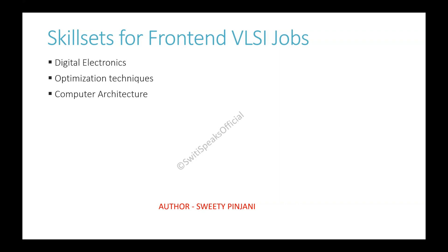The next thing is computer architecture. This also all of us have learned in college — microprocessor, microarchitecture, pipelining concepts, different memory levels. You need to go through them thoroughly: how processor pipelining works, what are different types of hazards, what are different levels of memory. There is RAM, ROM, main memory, secondary memory, and cache — which can also have different levels: L1, L2, L3. Then there are coherency concepts in memory, how to ensure coherency is maintained, and cache replacement algorithms.